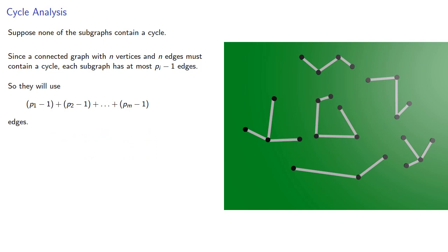But remember, we still have all of our vertices, so all of the p's will sum to k plus 1, and we're subtracting 1 for every component, so we'll subtract m.